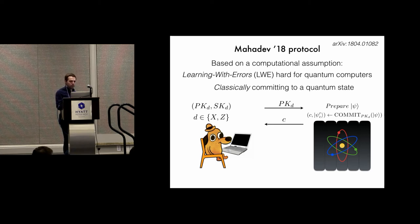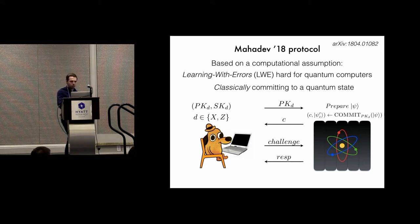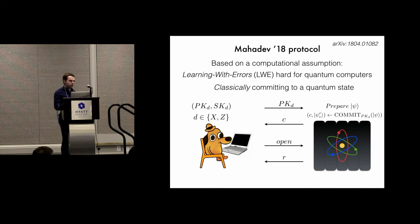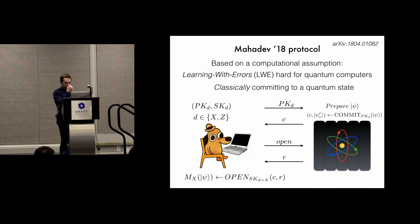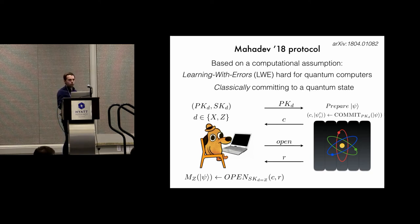Now that the commitment has been sent to the verifier, the prover is not able to change its mind about what state it prepared. The verifier can test this with a number of challenge rounds — either accepting or rejecting — and provided it accepts, the verifier can ask the prover to open the commitment. The prover then measures the quantum state from the commitment algorithm and produces a bit string r, which it sends to the verifier. The property here is that if the verifier opens the commitment in the x direction, the reveal should be distributed the same as an x measurement of the original state; and if opened in the z direction, it should correspond to a z measurement of that qubit.